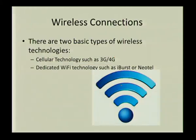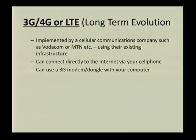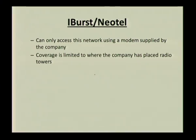There are two basic types of wireless technologies: cellular technology connecting via your cell phone with 3G and 4G, and dedicated Wi-Fi technology such as iBurst or Neotel. 3G, 4G, or LTE — long-term evolution — is implemented by cellular communications companies like Vodacom or MTN. You can connect directly to the internet via your cell phone or use a 3G modem or dongle with your laptop. iBurst or Neotel networks can only be accessed by a modem supplied by those companies, and coverage is limited depending on where radio towers are placed.